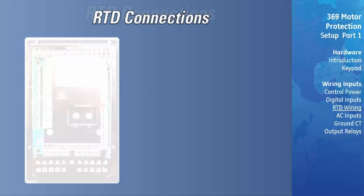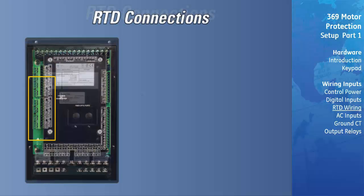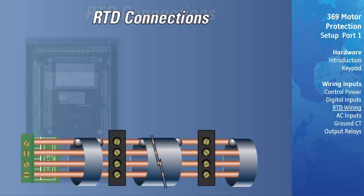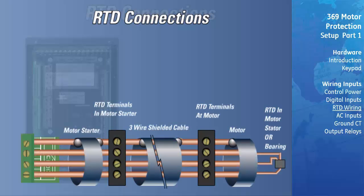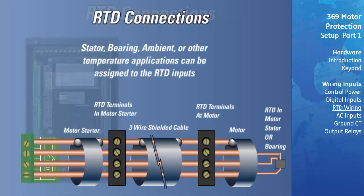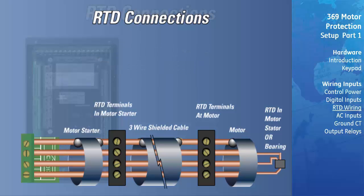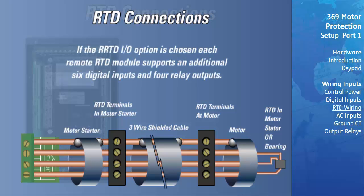When the RTD option is enabled, the 369 can support up to 12 RTD inputs, as can each additional remote RTD module. Stator, bearing, ambient, or other temperature applications can be assigned to the RTD inputs, which are configured to support either 100 ohm platinum, 100 ohm nickel, 120 ohm nickel, or 10 ohm copper 3-wire RTDs. Note that if the RRTD IO option is chosen, each remote RTD module supports an additional 6 digital inputs and 4 relay outputs.